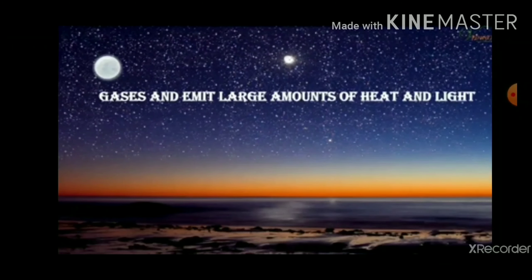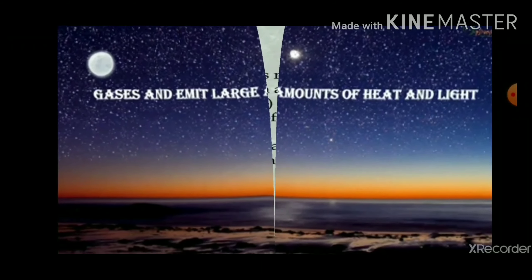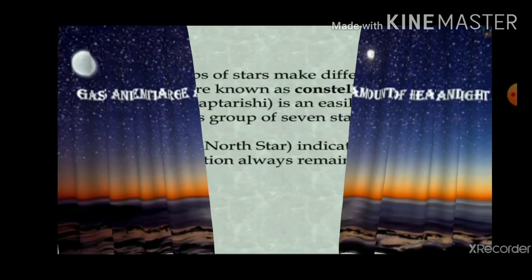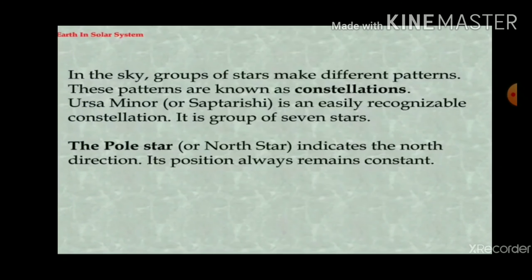Stars are made up of gases and emit a large amount of heat and light. In the sky, groups of stars make different patterns. These patterns are known as constellations.